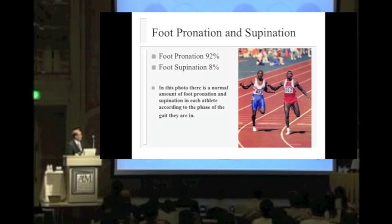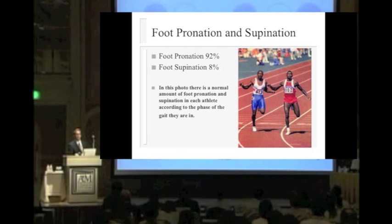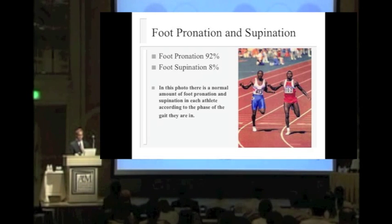When we look at this picture, we see two athletes running. Each athlete has a different presentation to the foot as it lands through the running. The patient on your right is in abnormal pronation, and the athlete on the left is in normal supination.